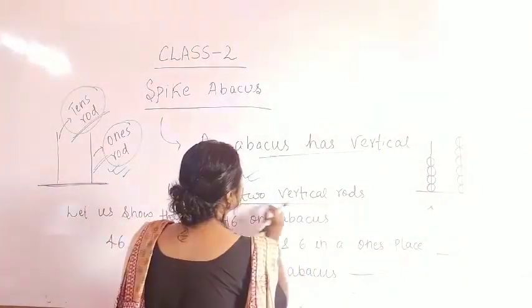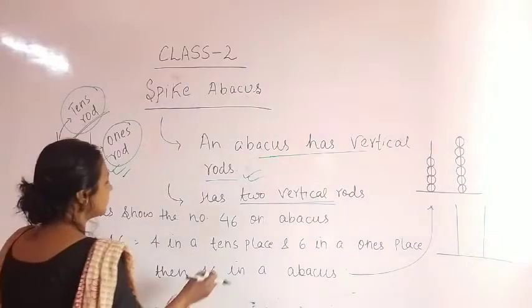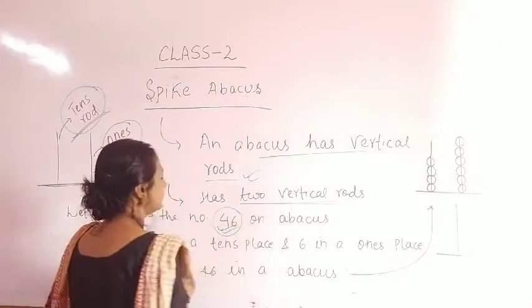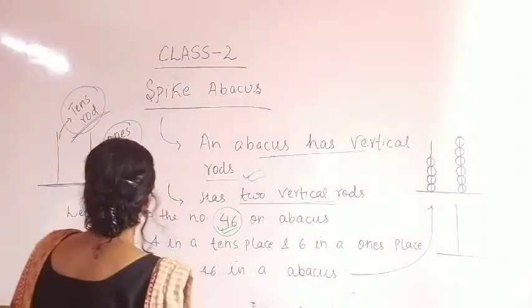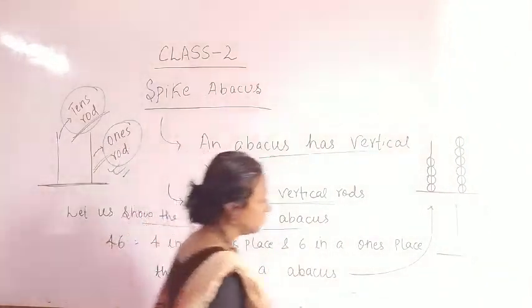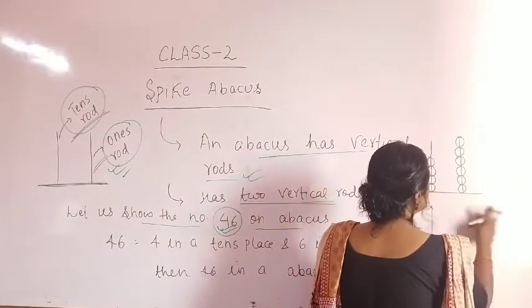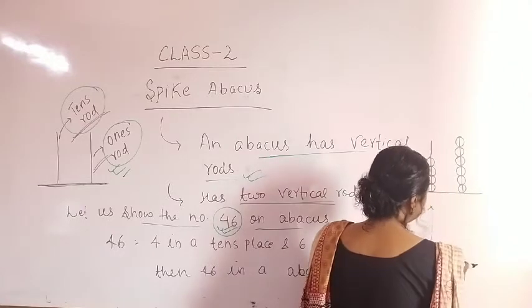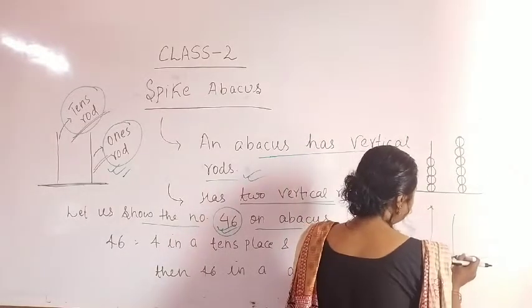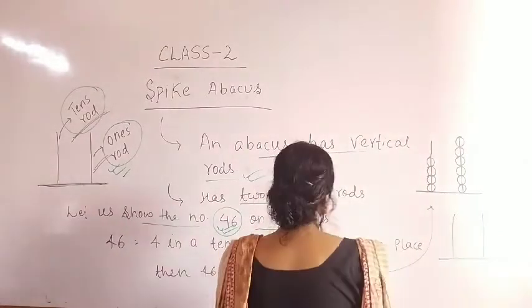The spike abacus has two vertical rods. First we show the number 46 in the abacus. We draw one horizontal surface and then two vertical rods, and we write 46 in the abacus.